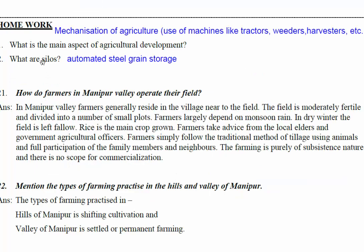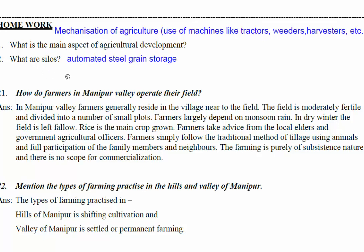Homework: what is the main aspect of agricultural development? The main aspect is mechanization of agriculture — the use of machines like tractors, harvesters, etc. What are silos? Silos are automated steel grain storage used in the United States of America.